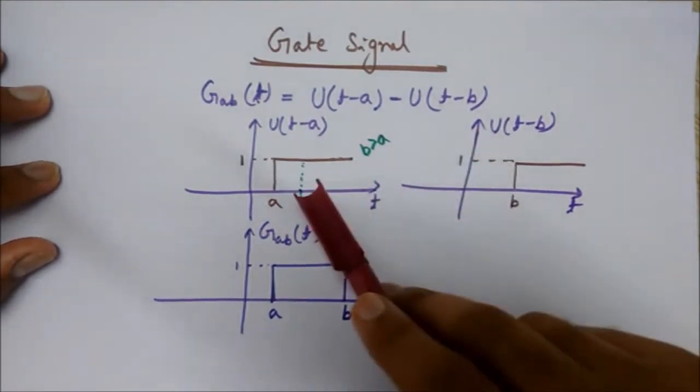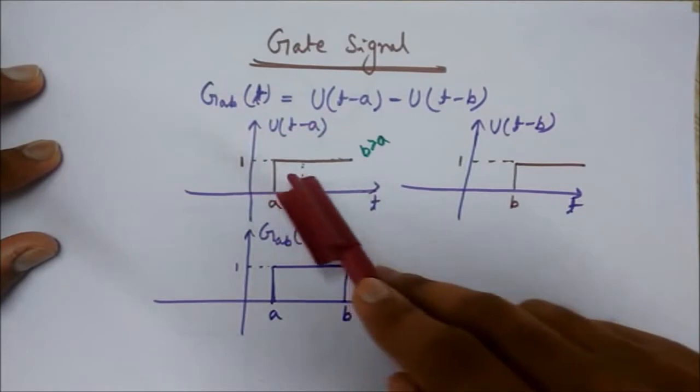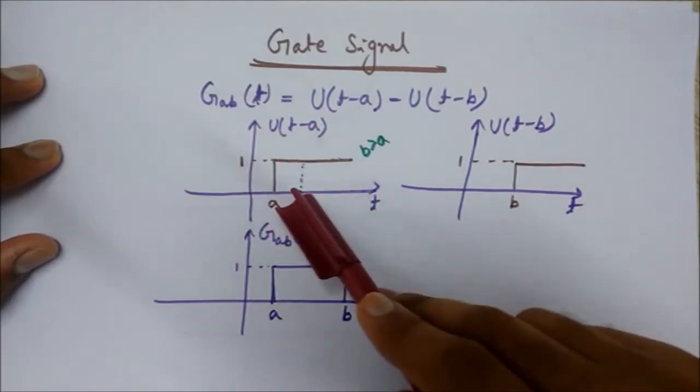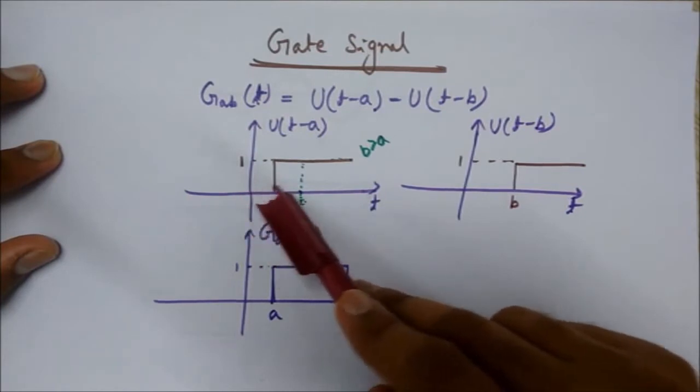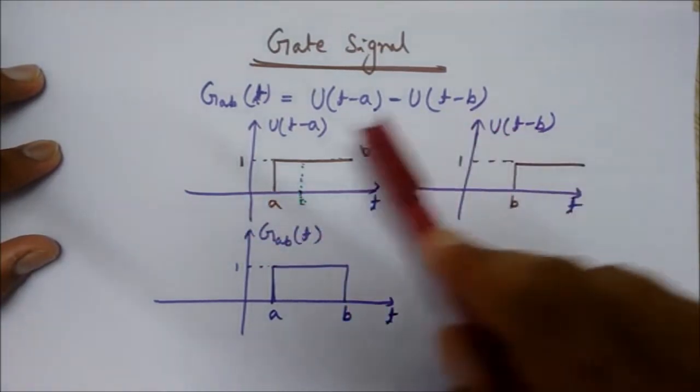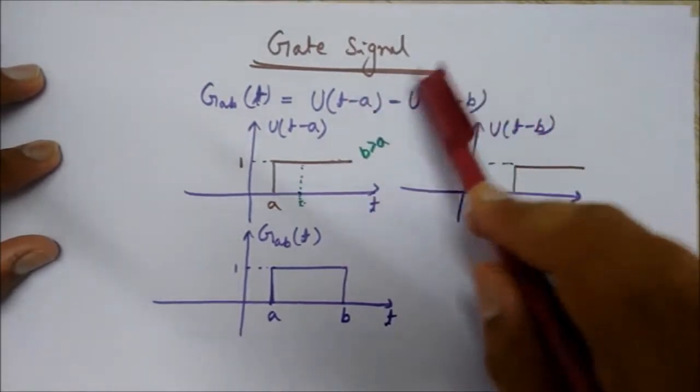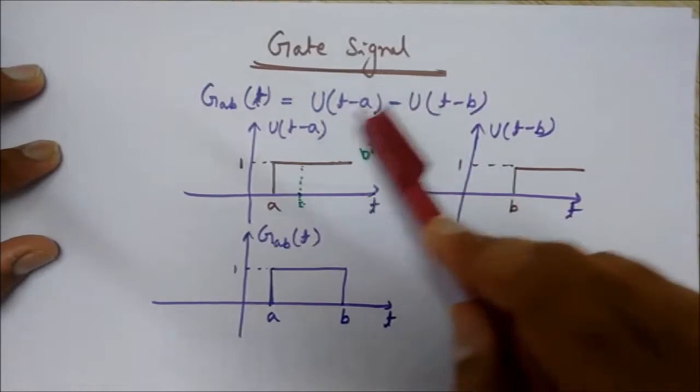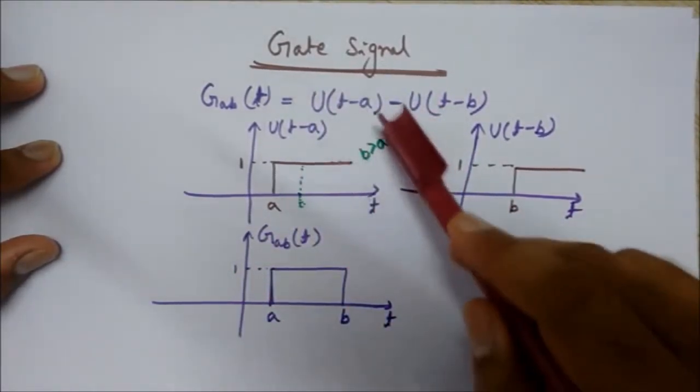Here's the graph of U(t-a) - we have seen it earlier. It has been shifted by constant value a on the right side, and this by b, and its amplitude is 1. So if I subtract this U(t-b) signal from this U(t-a) signal, taking b greater than a...